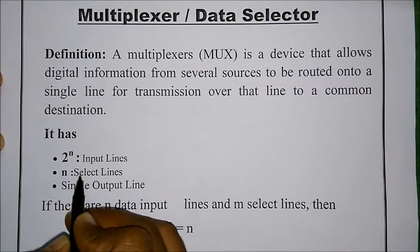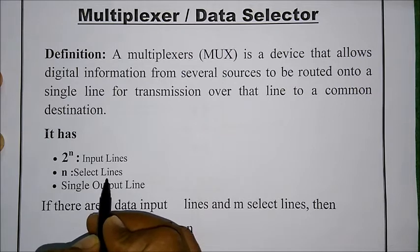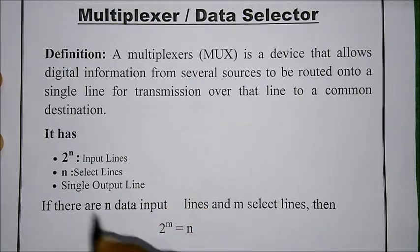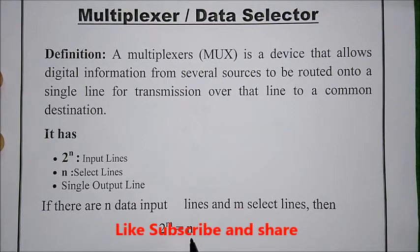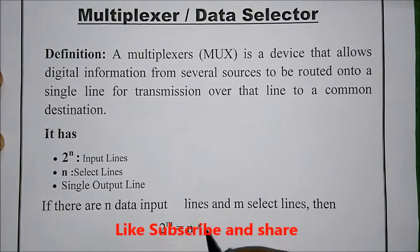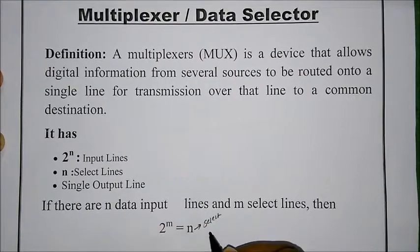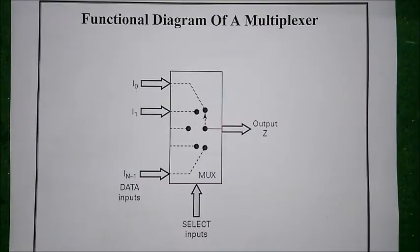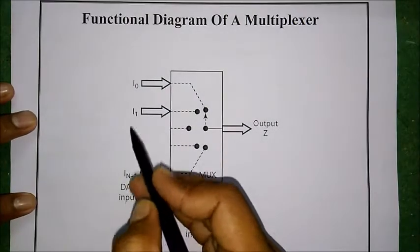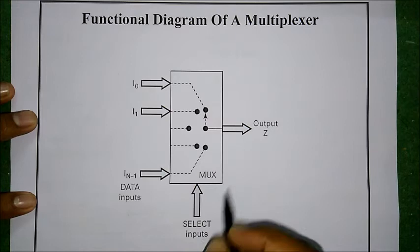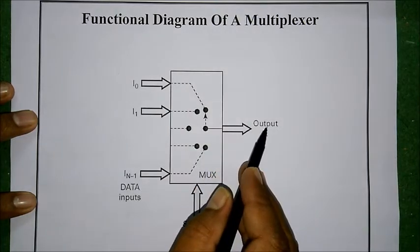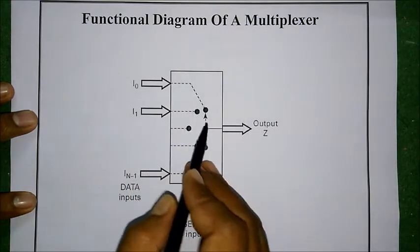The output is always dependent upon the select lines. If you have n select lines, then you will have 2^n input lines. The relation is: 2^m equals n, where n is the number of select lines and 2^m is the number of input lines. In the functional diagram, based on the select line combination, it selects one of the inputs and transmits it to the output — that is why it is called a data selector.